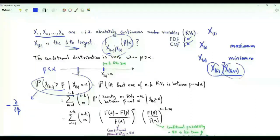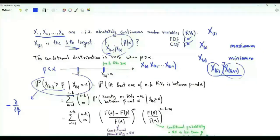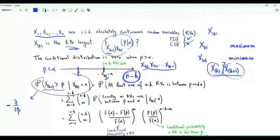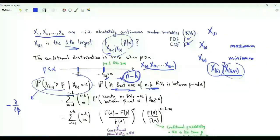Note that by definition, X of k is greater than X of k+1, so our interest is the case where beta is less than alpha. On the number line, alpha is here and beta is to its left. Xk equals alpha; the maximum X1 and variables X2 through Xk-1 all have values greater than alpha. For Xk+1 to be greater than beta, at least one of the remaining N minus k random variables must fall in the interval between beta and alpha.